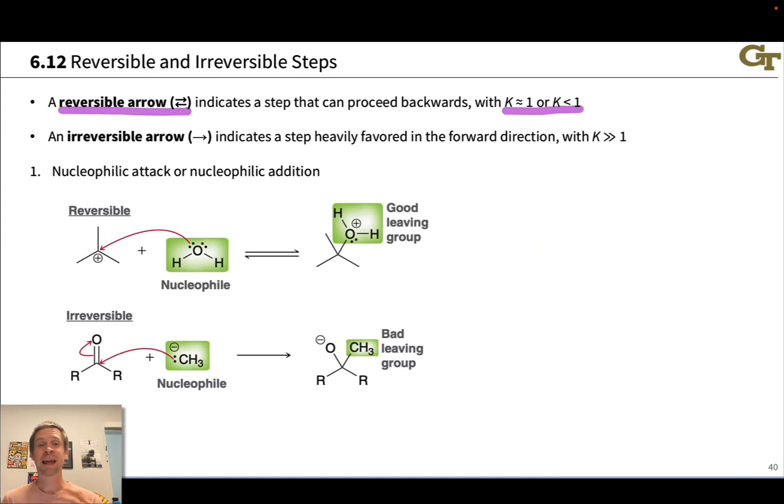On the other hand, a step that is heavily favored in the forward direction is drawn using an irreversible arrow indicating that the reverse reaction is negligible. K is much greater than one. The equilibrium constant is much greater than one. The products are heavily favored and so as soon as the reactants react, they're gone and there's no going backwards. In the remainder of this video, we're going to highlight some examples of reversible and irreversible steps with some of the labels and general ideas, general patterns in electron flow we've seen previously.